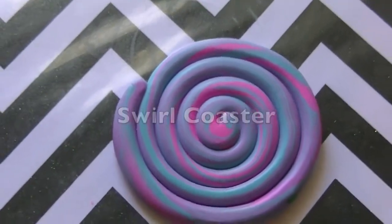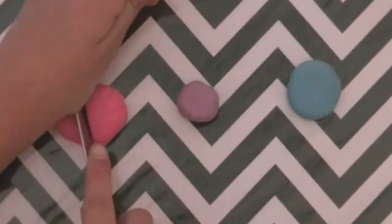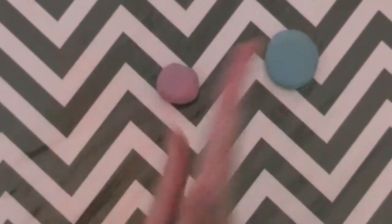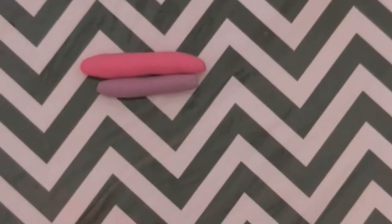So for the swirl coaster, you're going to need three colors of clay, and I'm using polymer clay. So right now, what you have to do is swirl each of your separate colors into snakes, and then mush them all together until you get a swirled kind of look.